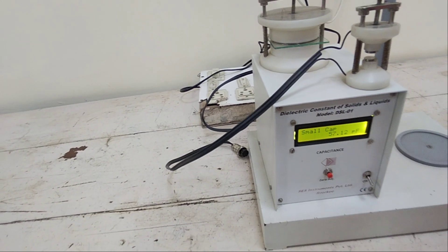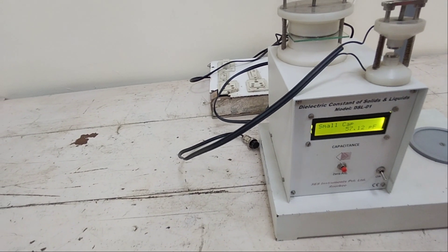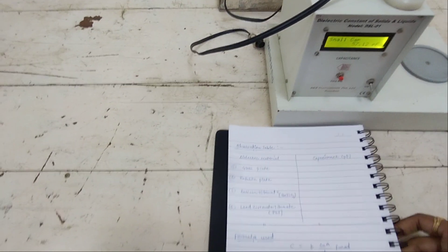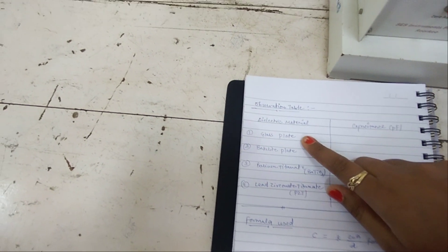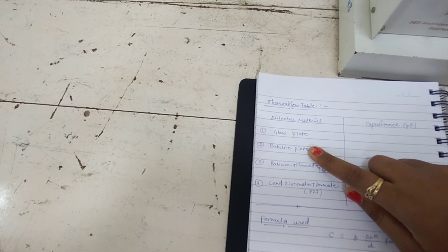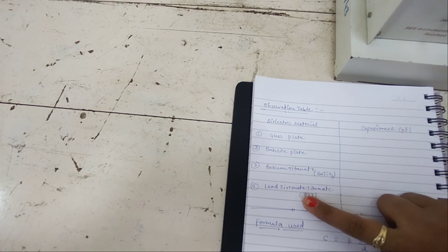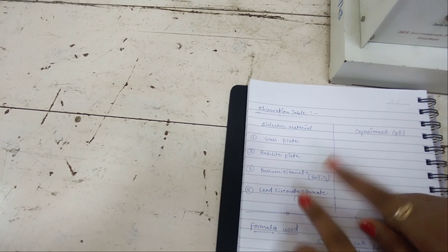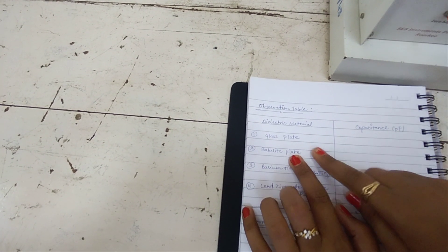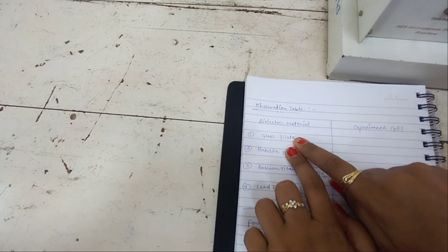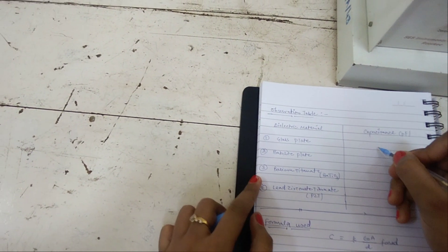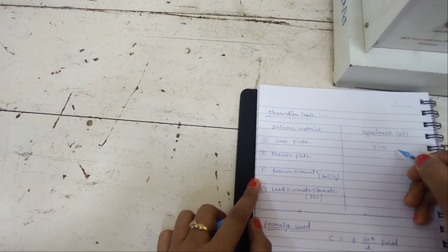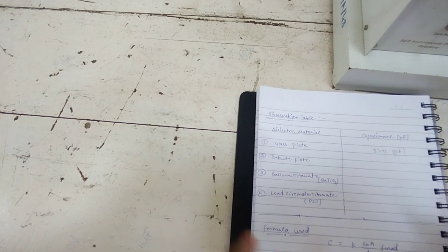Now there is your observation table in which you have to take readings of different materials. This is the dielectric constant for glass plate, bakelite plate, barium titanate, and lead zirconate titanate. First, we have to measure the dielectric capacitance of glass plate. You have to write here the value of 57.11 picofarad.